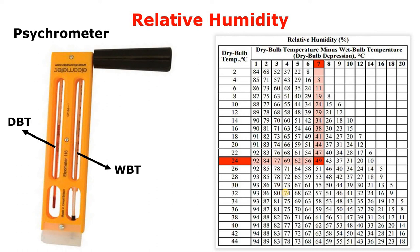Do you also get confused by the relative humidity concept and how to find it? Do you think that relative humidity can only be found using a psychrometric chart? In this video, we are going to discuss relative humidity in depth. We will learn how to find it with the help of a psychrometer and with the help of a relative humidity chart shown here on the screen.